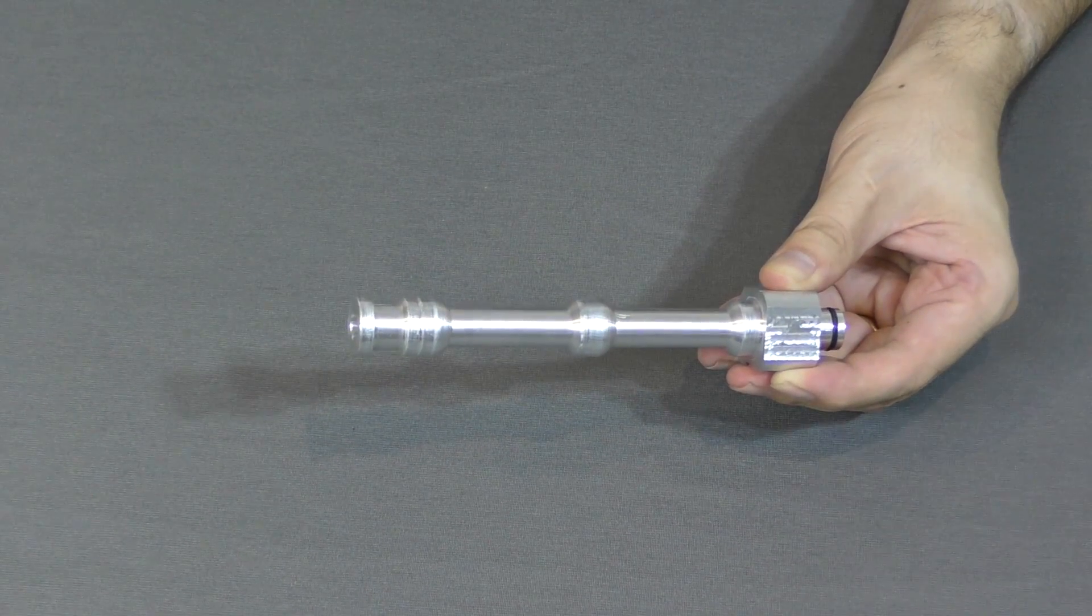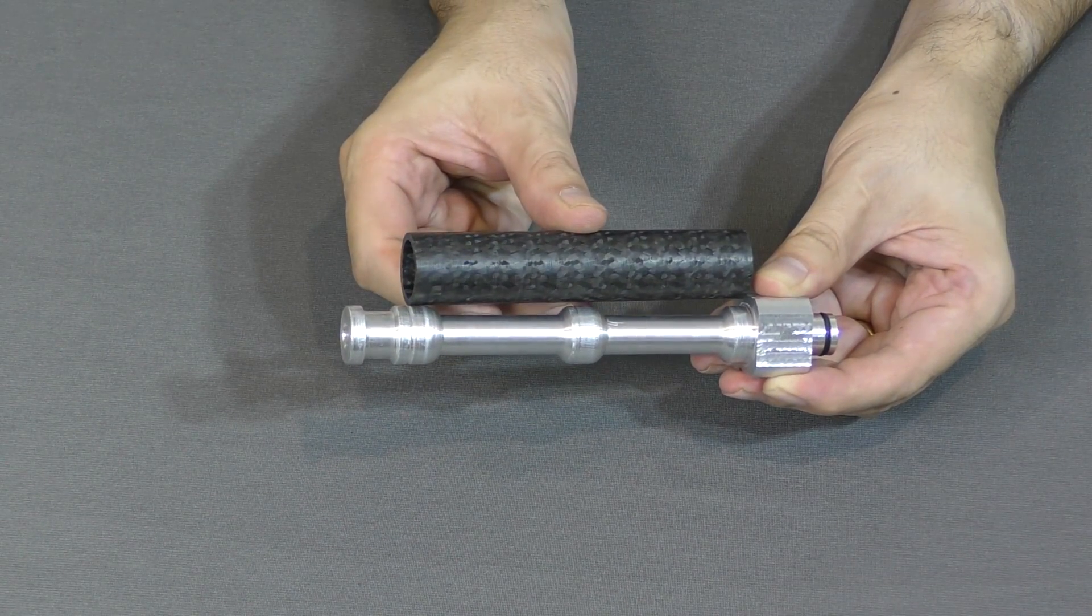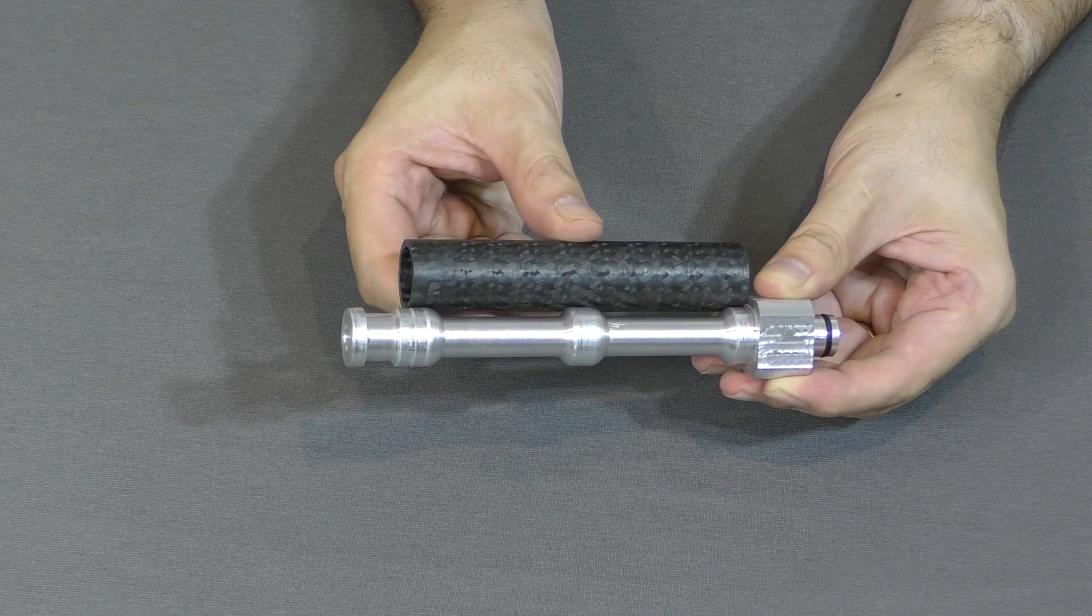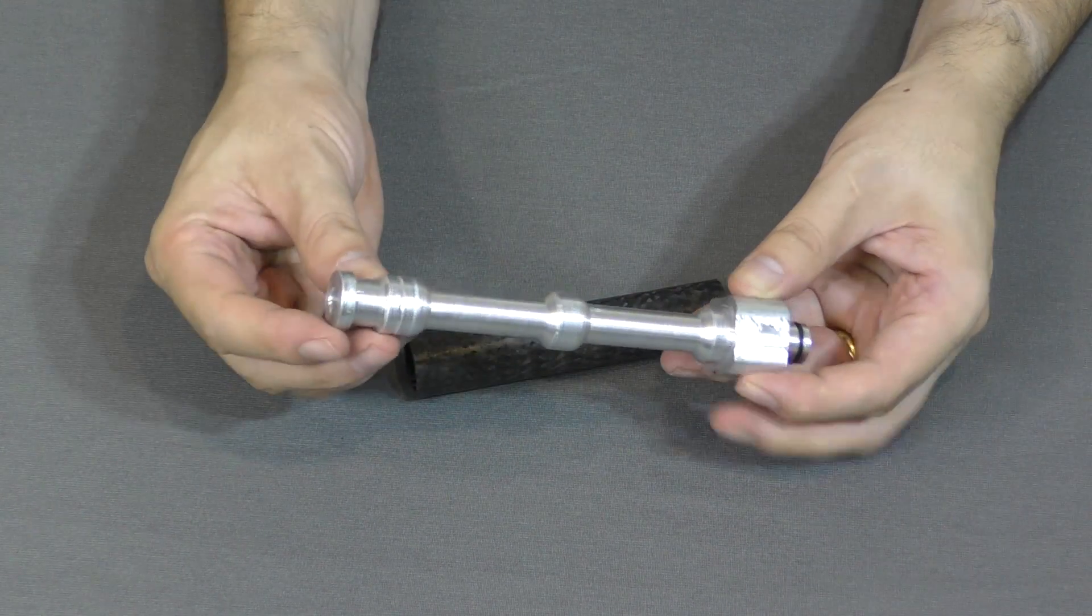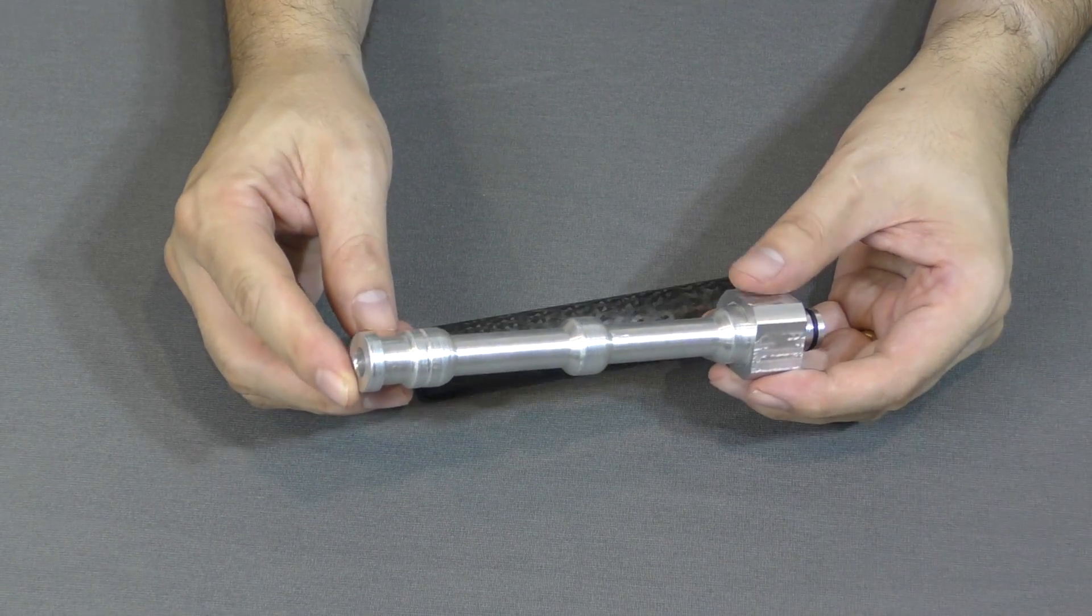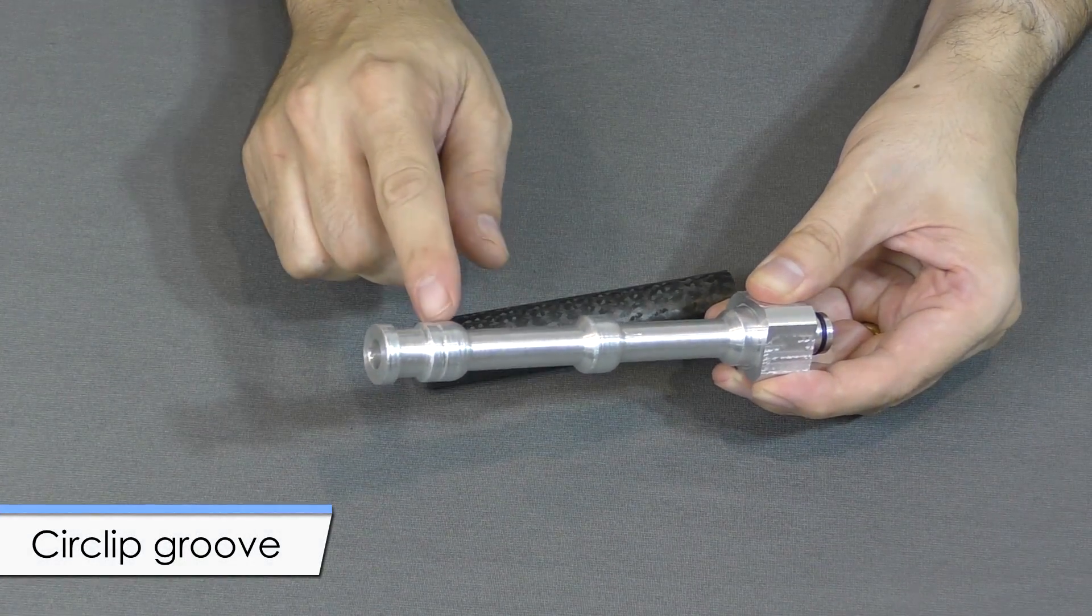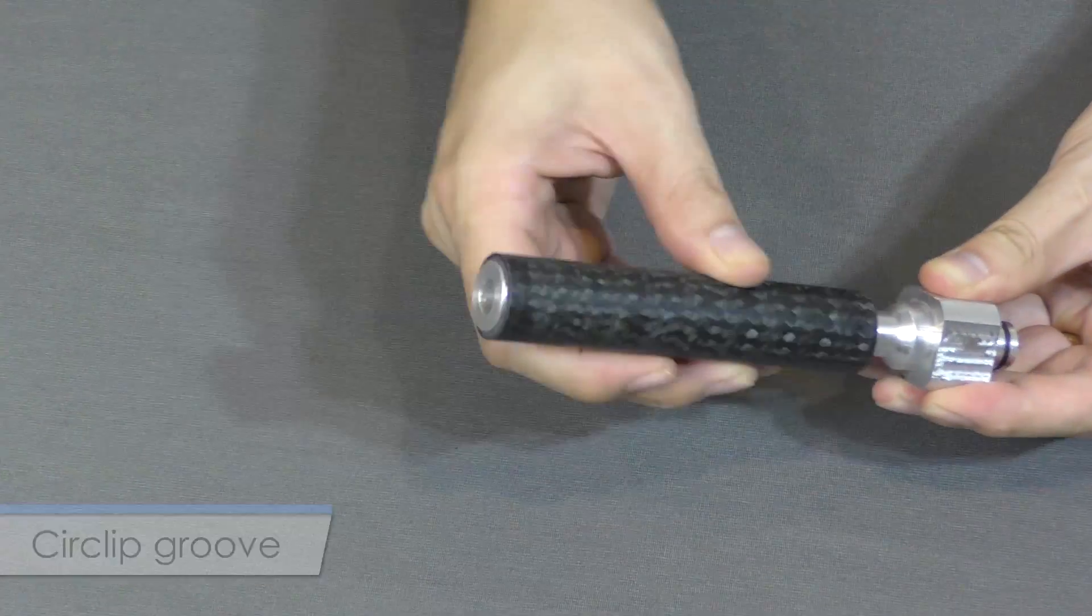Next is a long section to the bottom of the stager, machined down to reduce weight. The length was determined by the support bracket tube length and was chosen to provide enough support for the struts and room for the two levers. At the bottom is a groove for a circlip that holds the stager body inside the tube.